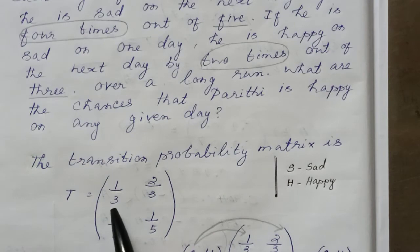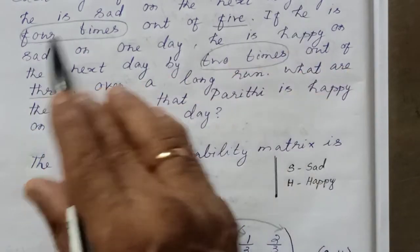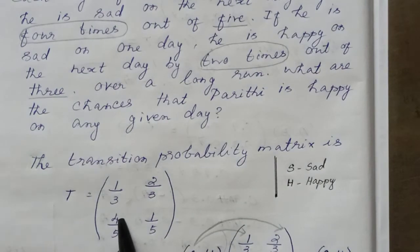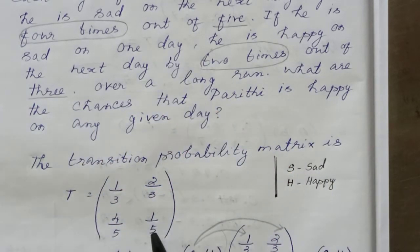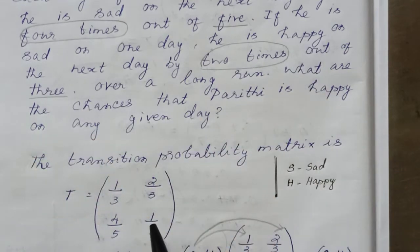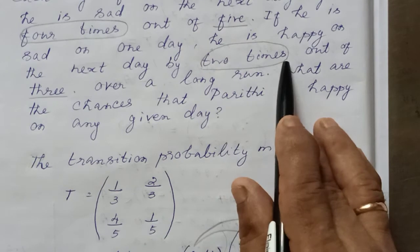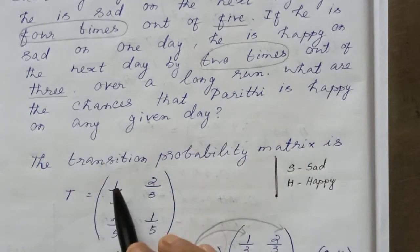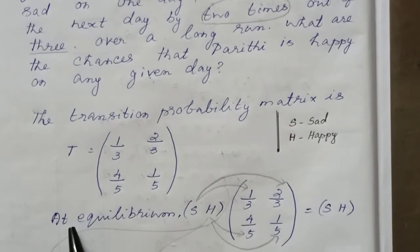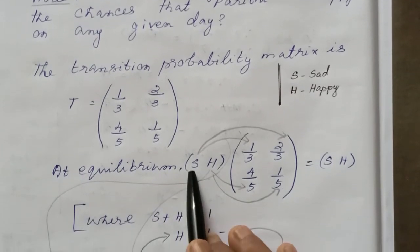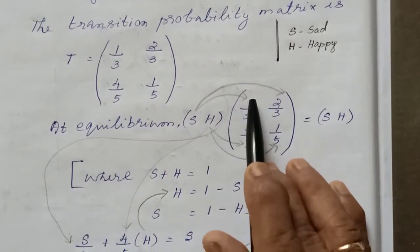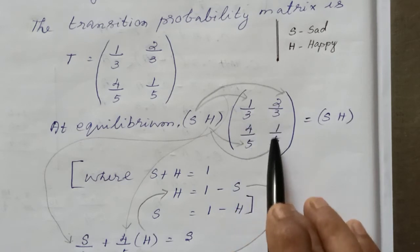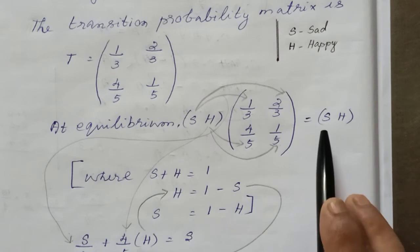Out of 5, he is happy on the next day. Out of 3, happy or sad. So this is how we can do it. At steady state, π equal to πT. That is: [S, H] times [1/3, 2/3; 4/5, 1/5] equals [S, H].